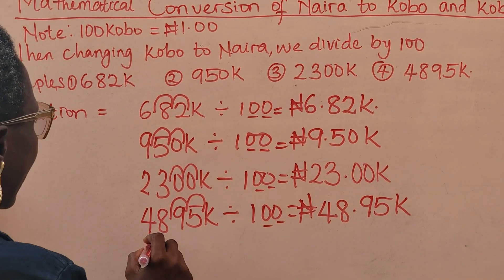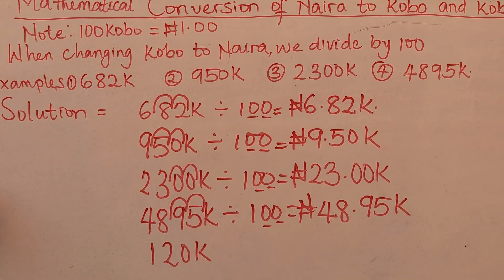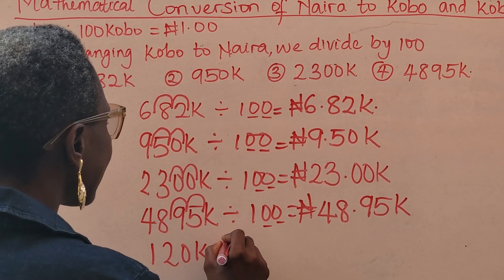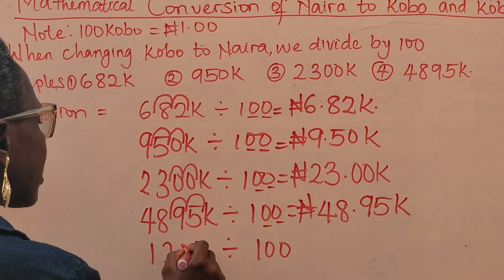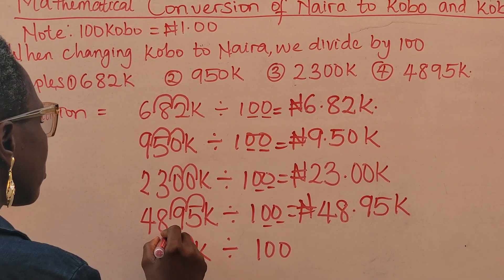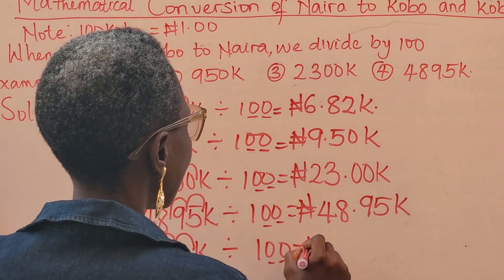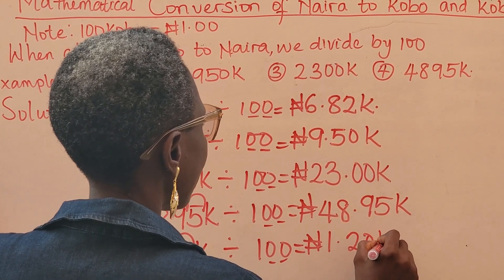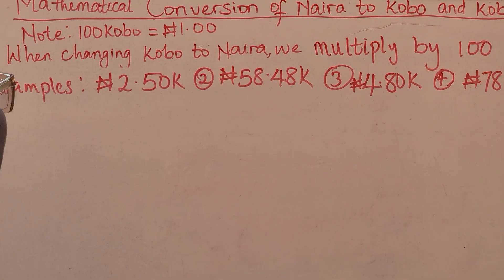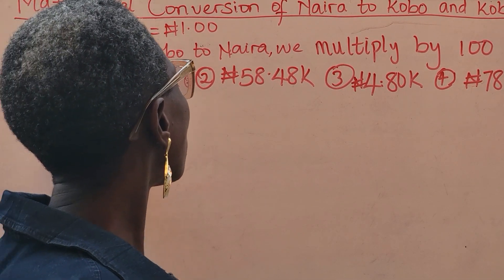Let's do one more. Say I have 120 kobo — what do I do? Divide by 100, so move the decimal point two times — one, two. The decimal point is now between 1 and 2, giving me 1 naira 20 kobo.